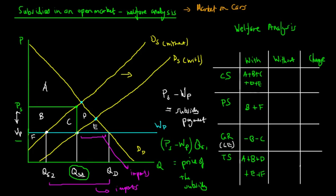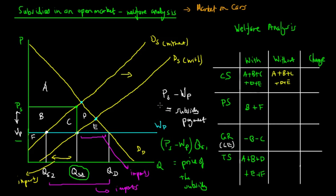Without the subsidy, imports increase from the gap (QS1 to QD) to the larger gap (QS2 to QD), as domestic production falls. Consumer surplus is unchanged at A + B + C + D + E, since consumers still purchase at the world price. Producer surplus decreases — without government assistance, producers only gain the small triangle F, so the change in producer surplus is negative B.